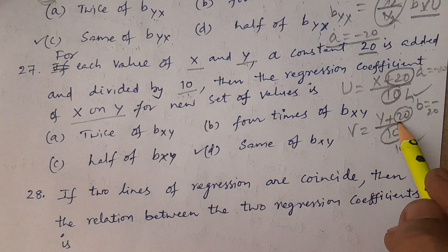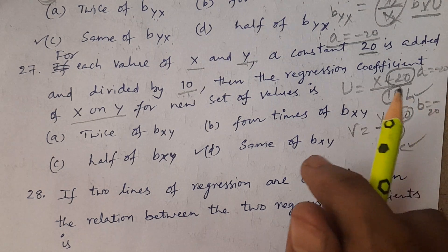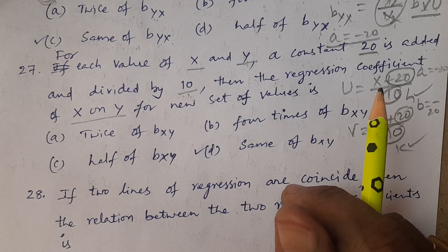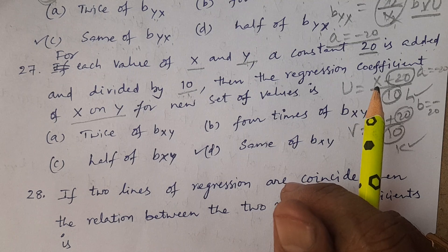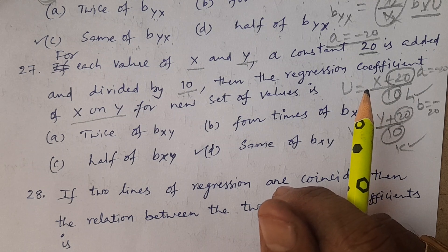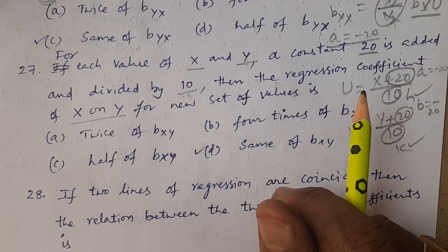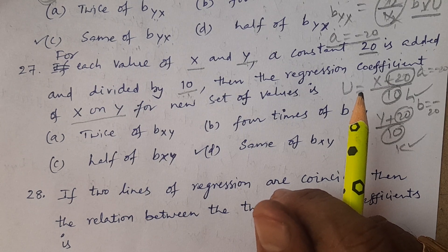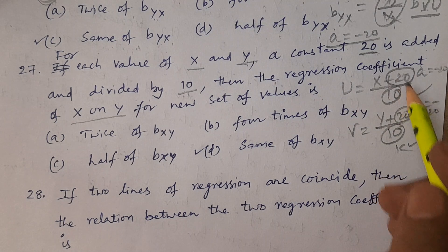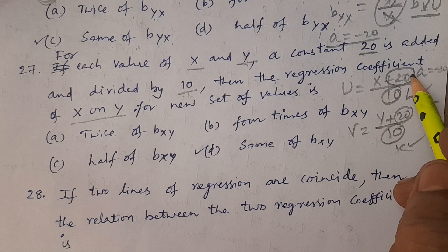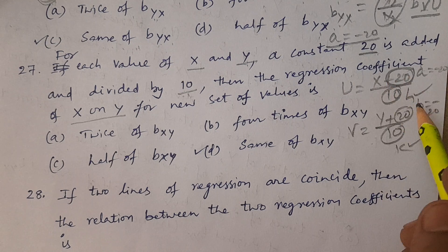But what about the plus 20? That is, which means minus of minus 20. We have already indicated that even though a particular constant is added or subtracted — that is shifting the origin, that is changing the origin — the regression coefficient is independent. Regression coefficient does not change; it is independent of shifting the origin. Therefore, adding or subtracting a constant does not change the regression coefficient. So for adding 20, regression coefficient does not change.